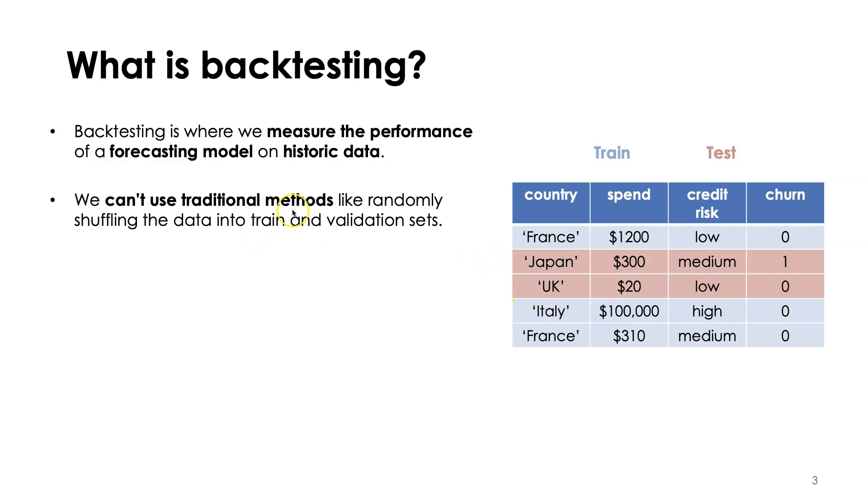Now we can't use traditional methods like randomly shuffling the data into a train and validation set when working with time series data. And that's because when we work with time series data the rows are no longer independent. So rows which are closer together in time are more likely to be similar and related to one another. The fact that we have this time ordering means that the rows are no longer independent.